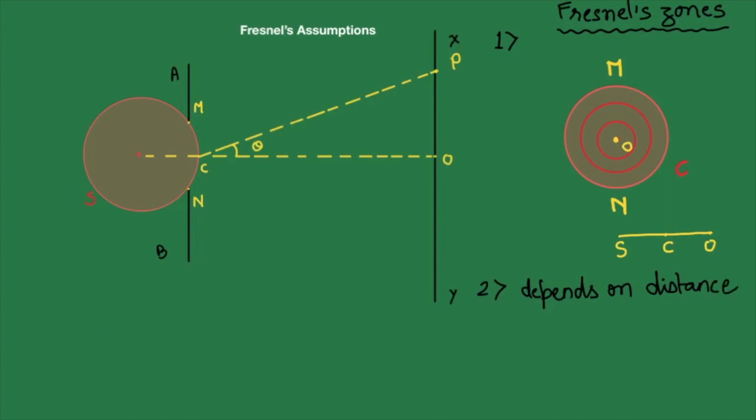Third, it is very important. Third, it will depend upon obliquity factor. Obliquity factor is defined as K which is a function of theta which we have already considered. It is the angle made from the x-axis and it is proportional to 1 plus cos theta.